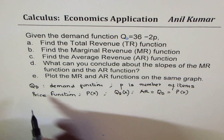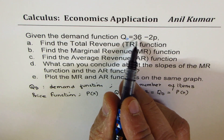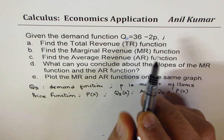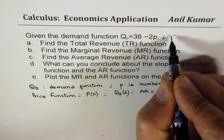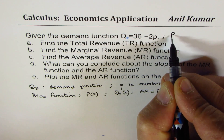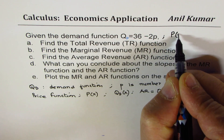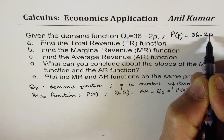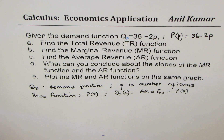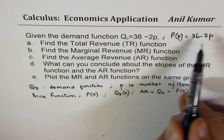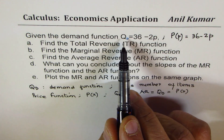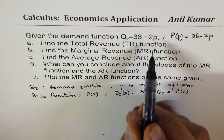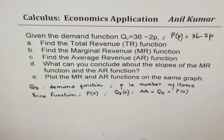Instead of q, I'll write this as capital P for price — price with number of items being sold — as 36 minus 2p. Small p here is the quantity, the number of items being sold. I'm using capital P for price just to avoid confusion with quantity for some students.